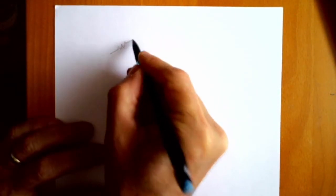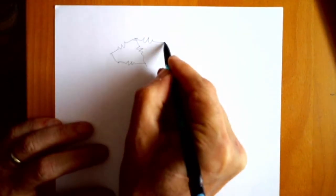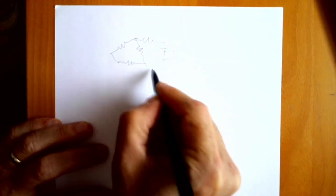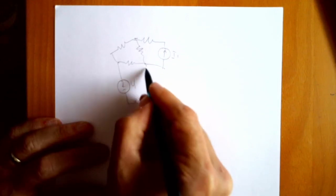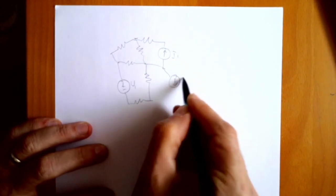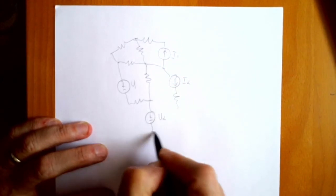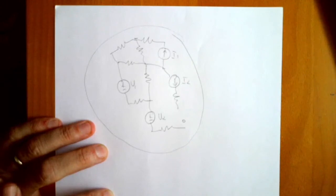Suppose I have some complicated network with resistors — I don't know how they're connected together, some complicated thing — and then maybe it's also got some current sources, various kinds, let's say I1, and maybe it's got a voltage source over here, V1, and then more resistors. This is I2, we have another resistor, we have another voltage source here, this is V2, and so on. It's just complicated. But I just wrap all that into a blob.